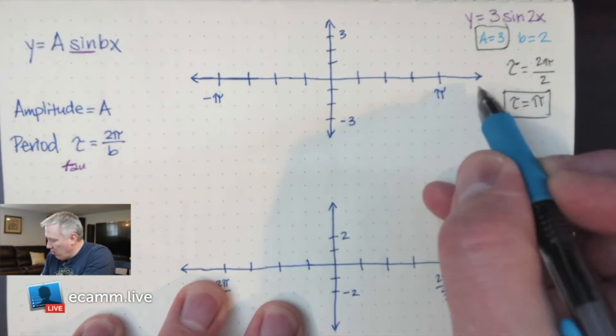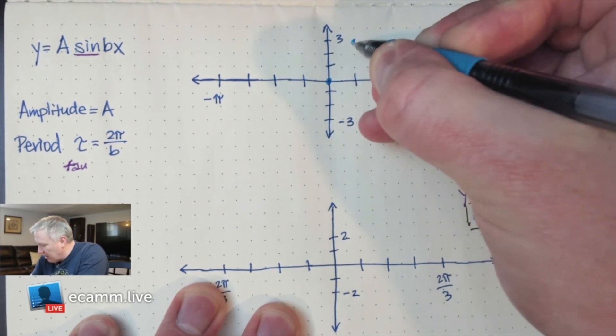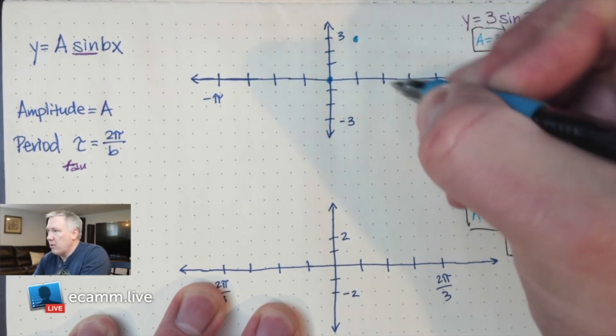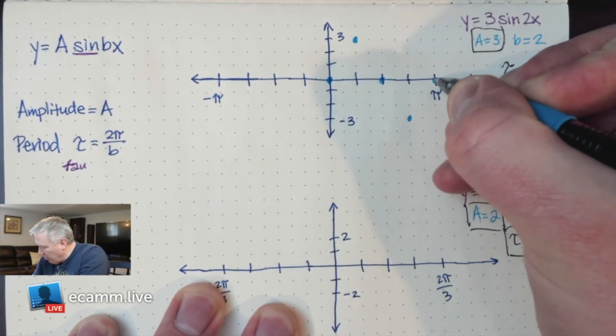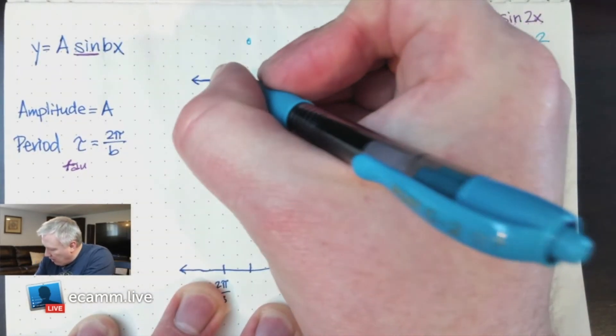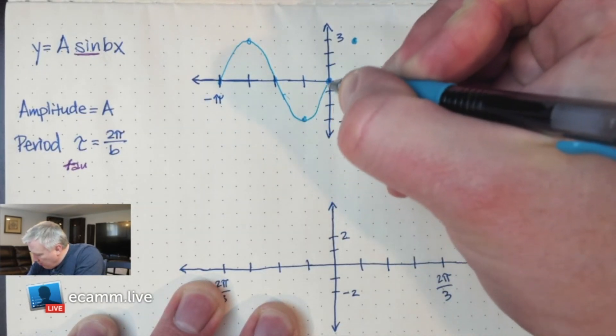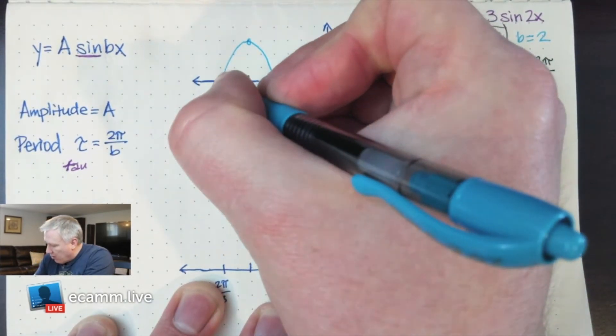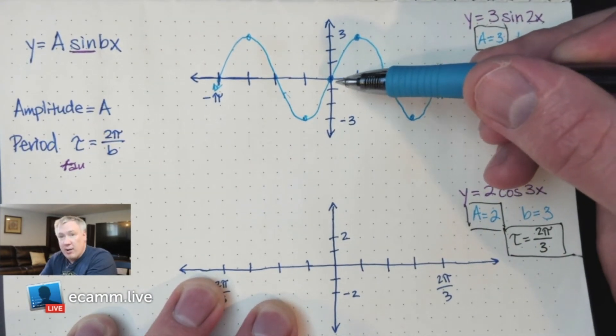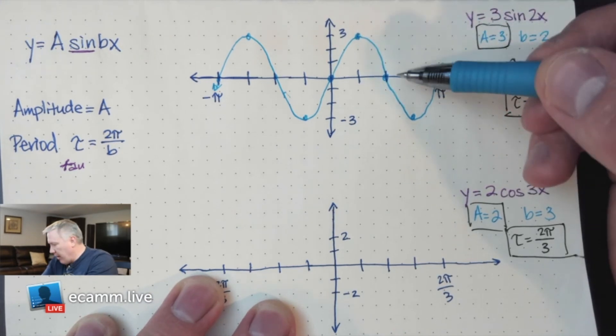Since my period is π, the quarter frame starts here in the middle, and then sine goes to its peak at the next quarter, which is 3 because that's my amplitude, back to the middle, then down to the bottom, back to the middle. I just repeat this cycle again and again. So there's the sine graph. Sine starts in the middle at 0, then goes up, back to the middle, down, up.